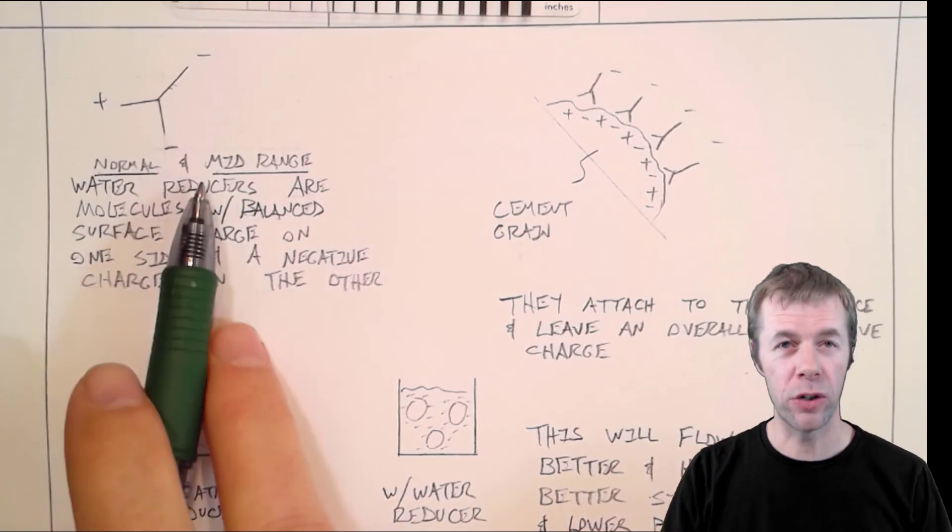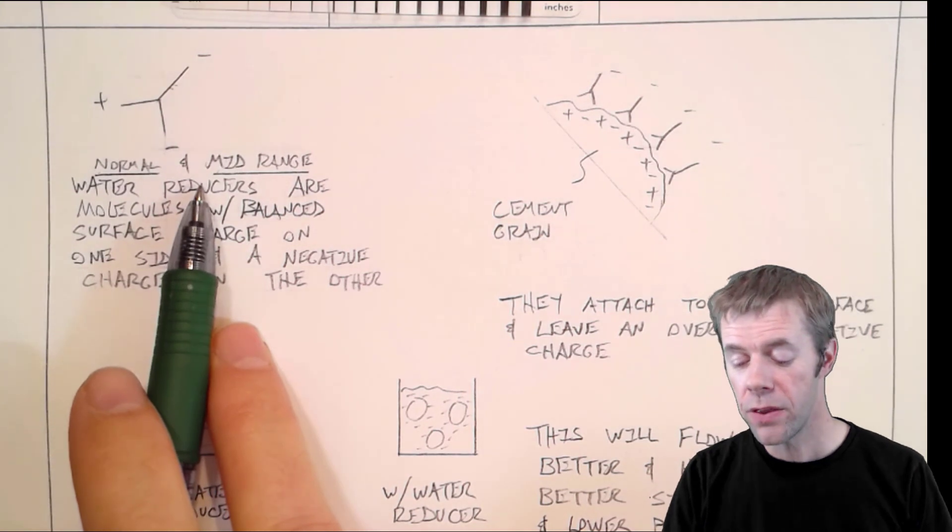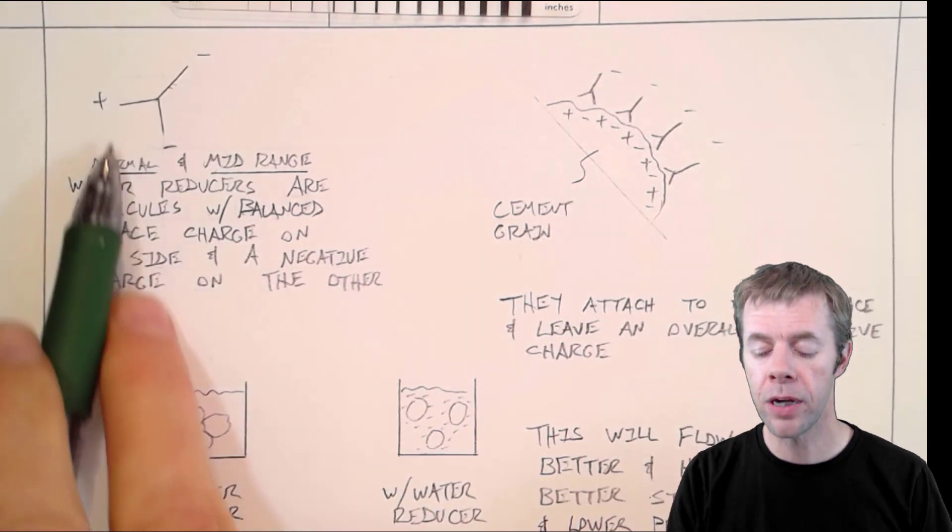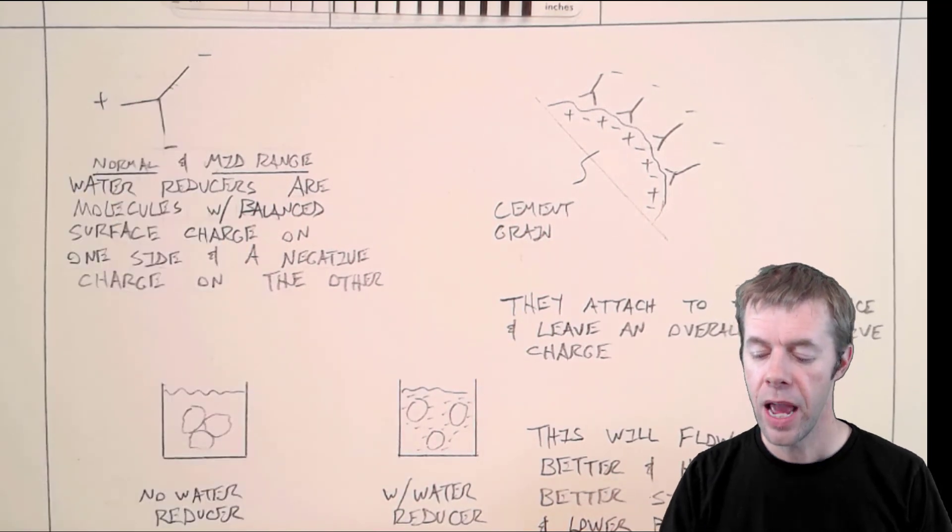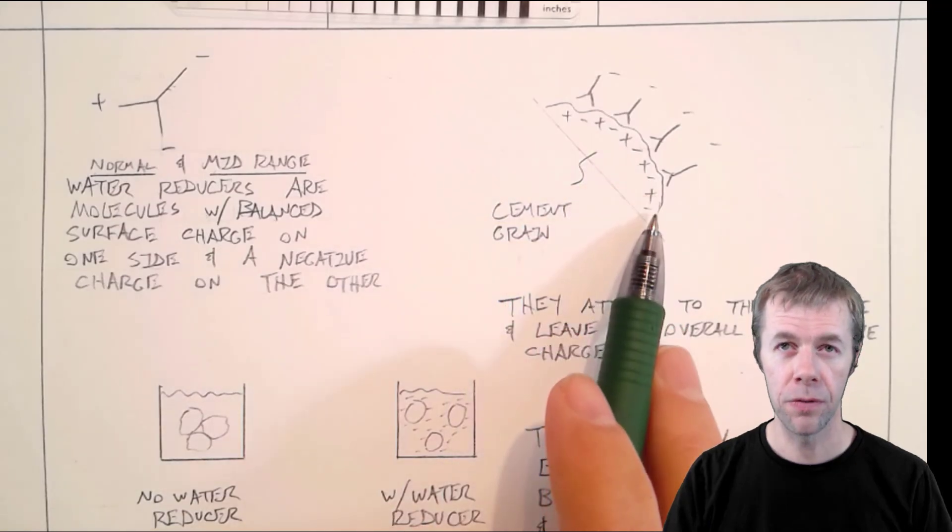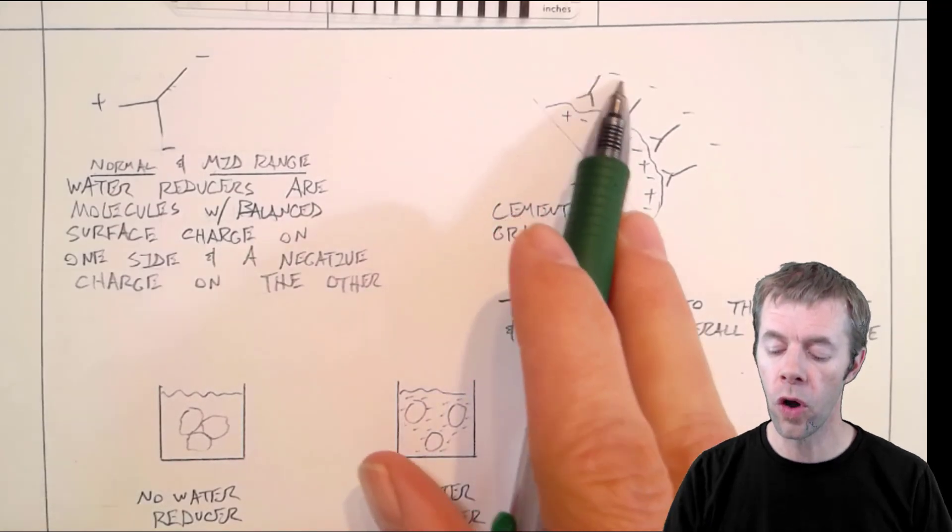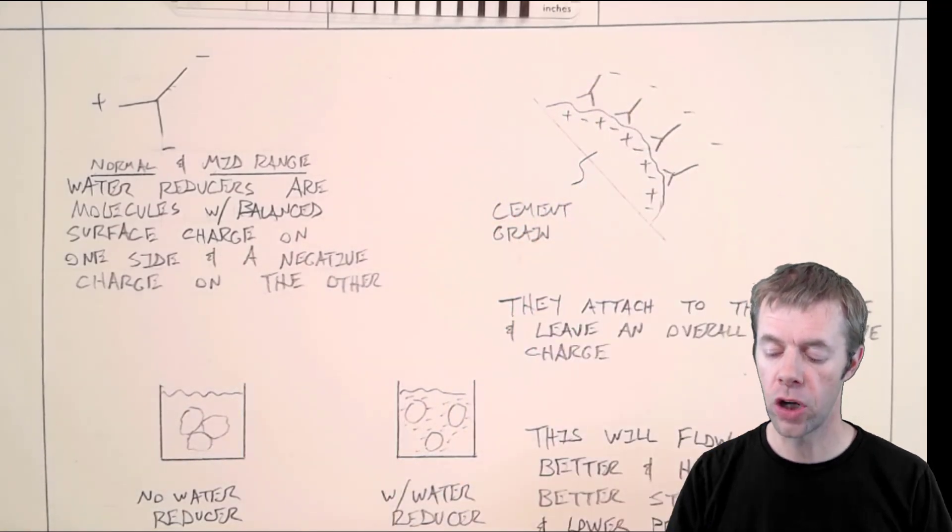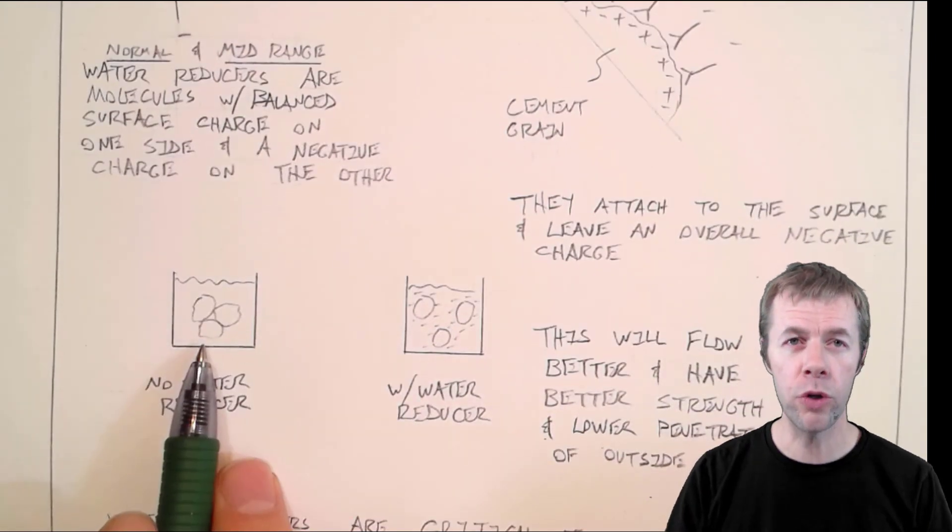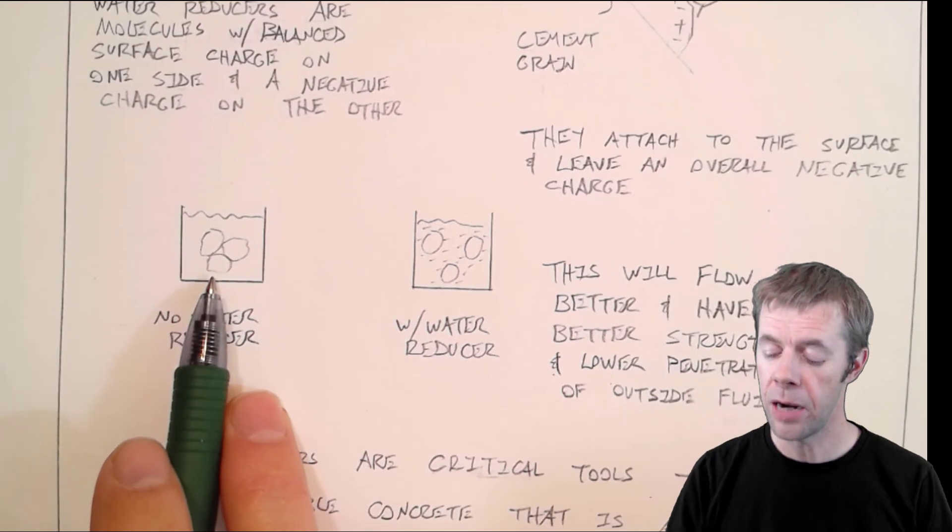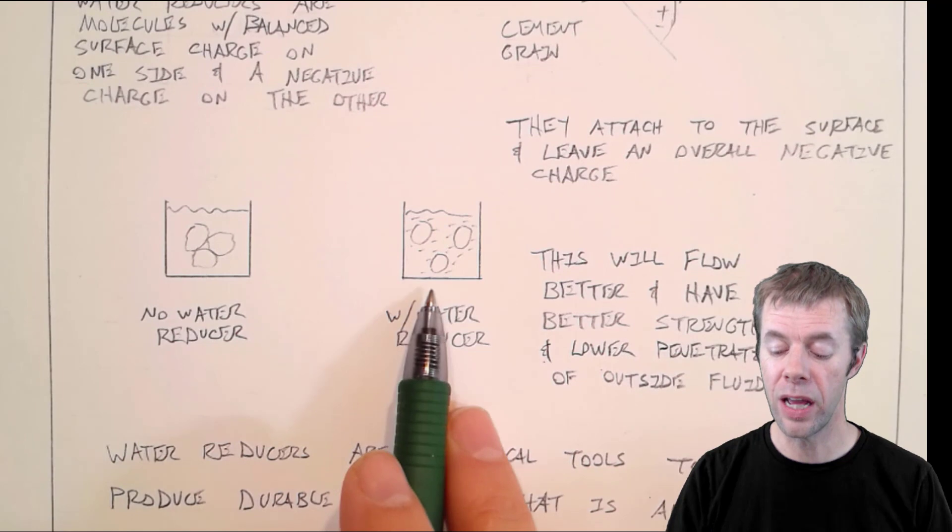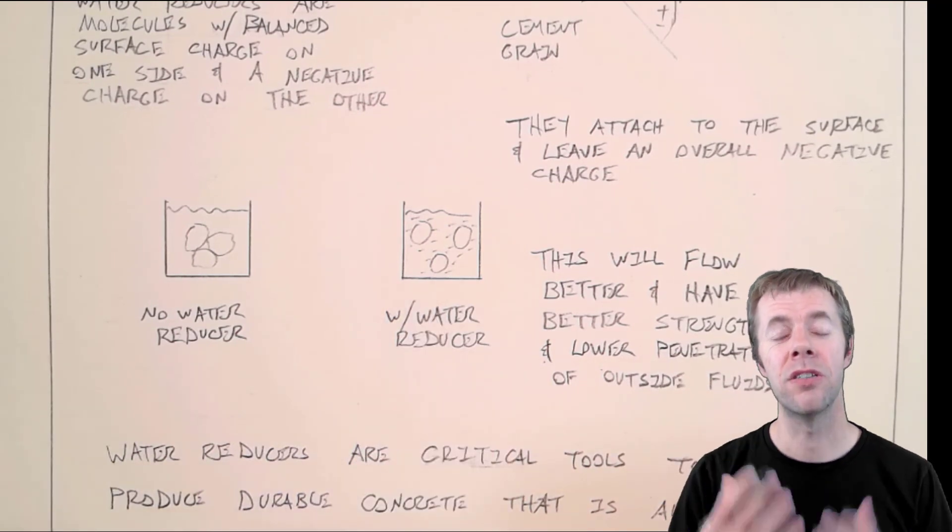This is one reason why our workability isn't quite as high as we would like it to be. And then here comes our friend's water reducers to the rescue. The normal and mid-range water reducers were balanced molecules. They had a plus and minus on one side, an overall minus on the other side.